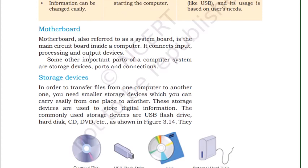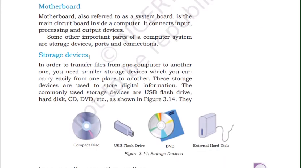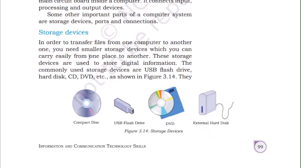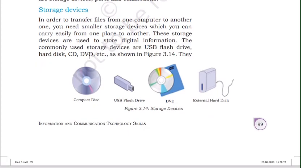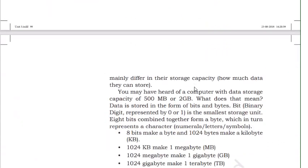The motherboard, also referred to as a system board, is the main circuit board inside the computer. It connects all input, processing, and output devices. Major components are stuck on the motherboard, which is why it is called the motherboard. Storage devices include CD, USB flash drive or pen drive, DVD, and external hard disk.